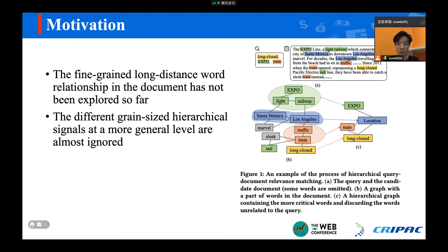The first motivation is that the fine-grained long-distance word relationships in the document has not been explored so far. Let me show you the example on the right side of the screen to illustrate it. Two boxes on the top of the picture represent the query and the document segment respectively. The query involves three keywords: long clothes, expo, and trend. We first extract some relative words in the document based on word semantic similarity.